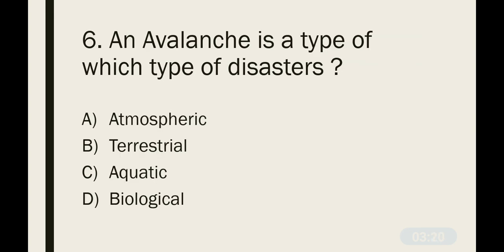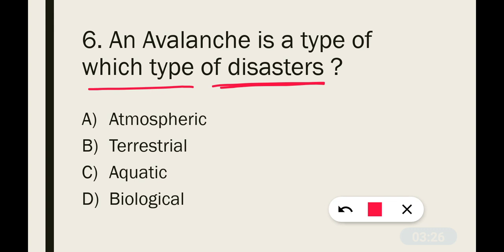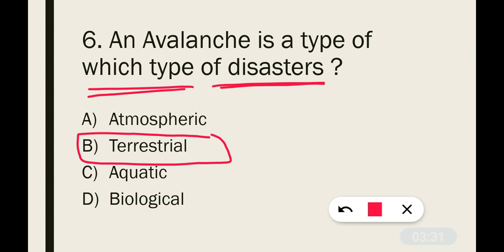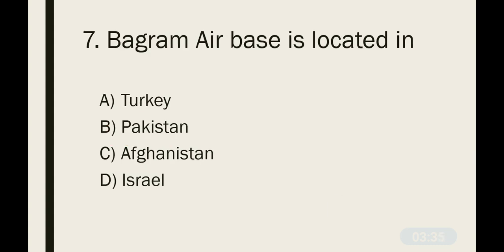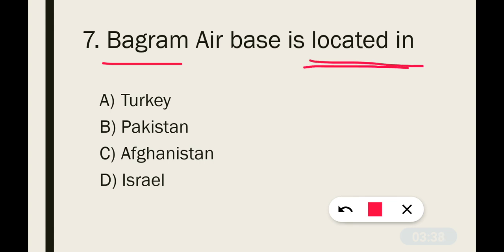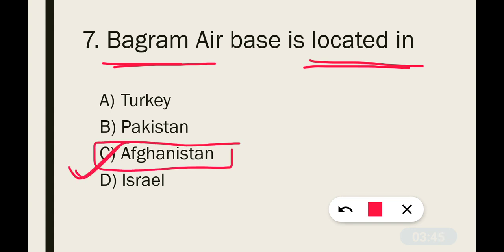Question number 6: An avalanche is a type of which kind of disaster? The correct answer is option B — Terrestrial Disaster. Question number 7: Bagram Air Base is located in which country? This is a famous air base. The correct answer is option C — it is located in Afghanistan.